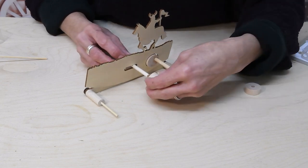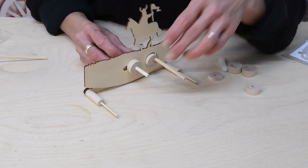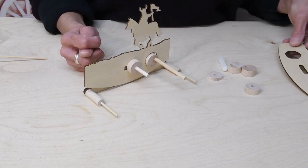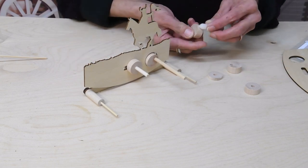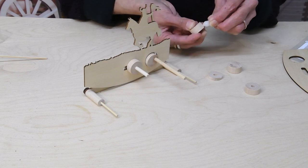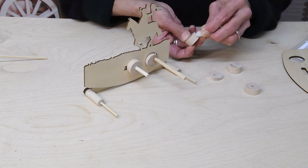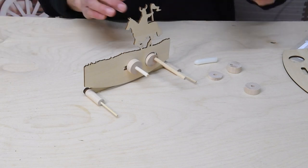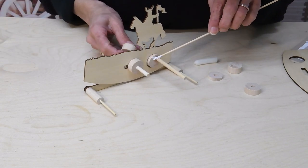Then we'll put the first spacer on. The instructions show that to be glued but it isn't necessary. You can just leave it loose. The cams you have to glue on firmly but the spacers you don't. So make sure you remember to wax the cams and we're ready to put the second one on.